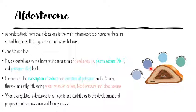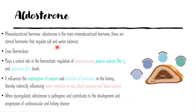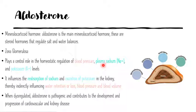The zona glomerulosa produces a corticosteroid hormone called aldosterone. It is a mineralocorticoid because it regulates salt and water balances in our blood, and because it regulates salt and water balances, it also controls blood pressure indirectly. To really understand the function of aldosterone, you just have to remember these two ions — sodium and potassium — and what aldosterone does to influence the serum concentration of sodium and potassium.